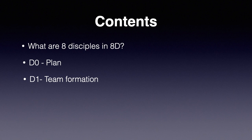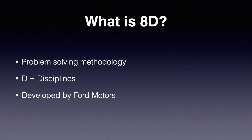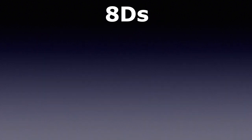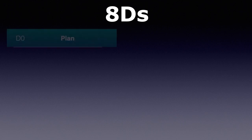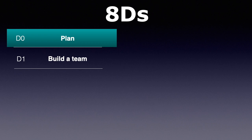So let's start. In 8D, there are 8 steps which are called disciplines, since it covers 8 aspects to solve a problem effectively. This method was developed by Ford Motors. The 8 disciplines in this methodology are: D0 emergency response action, D1 team formation,